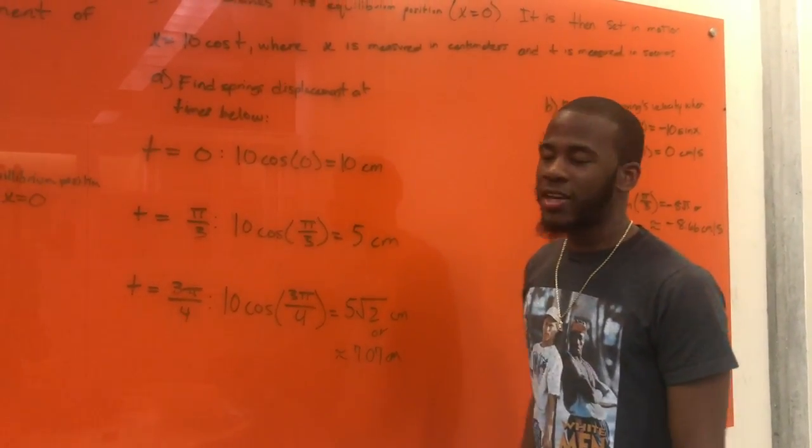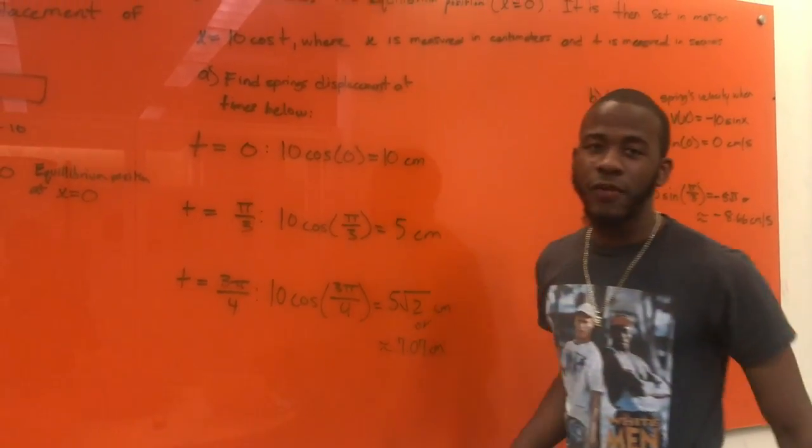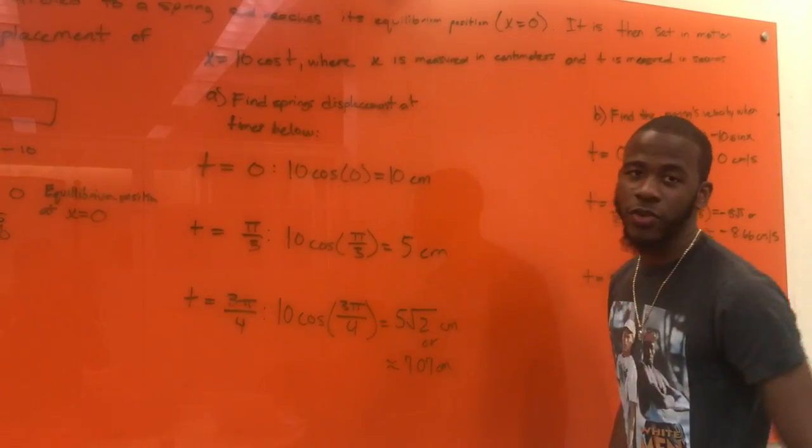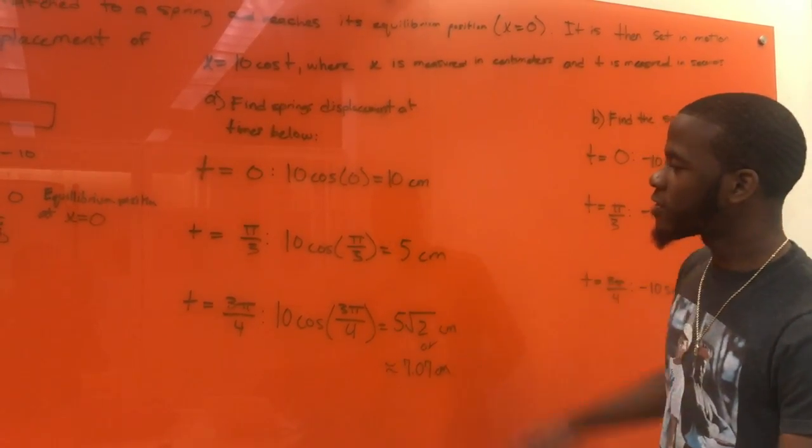Now, we're going to find the displacement at the time t equals pi over three. Therefore, we'll plug in pi over three into the initial equation. That's when we get 10 cosine of pi over three. That equals out to five centimeters.